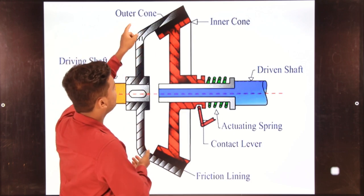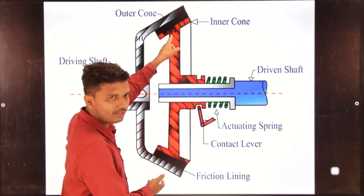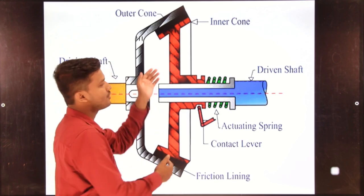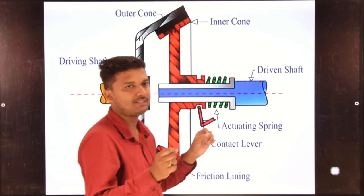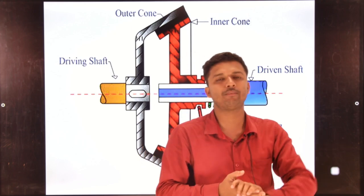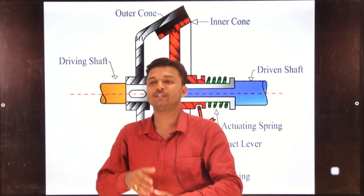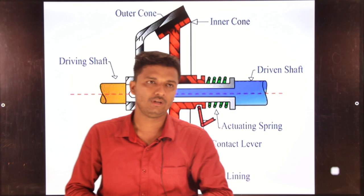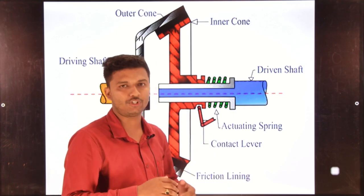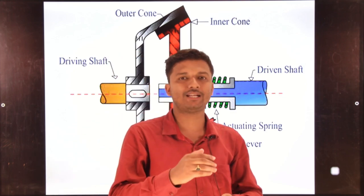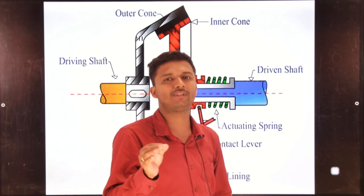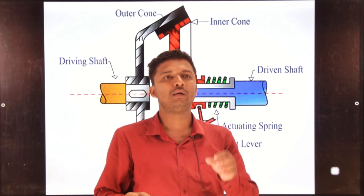In the outer cone there is an inner friction lining on both sides. In the inner cone there is an outer side friction lining — at two points there is friction lining. When we studied multi plate or single plate, there were friction plates. The friction lining and friction plate are different: the friction plate is much bigger than the friction lining. The friction lining is just a simple lining, like a brake pad.